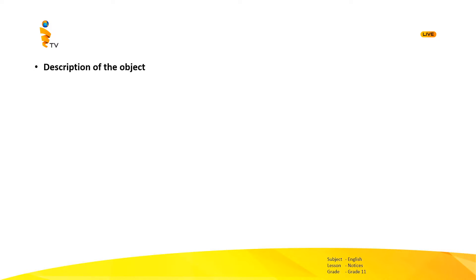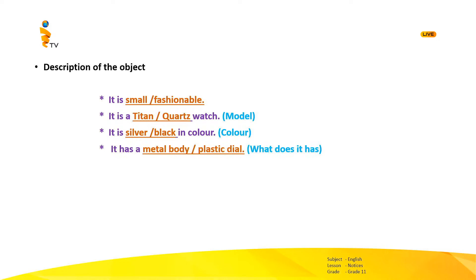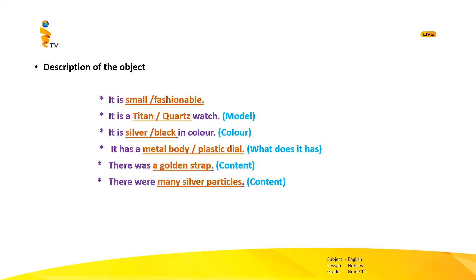How can we describe the object? These are some example sentences: 'It is small' or 'It is fashionable'. For the model: 'It is a Titan watch'. To tell about the colour: 'It is silver in colour'. To describe what it has: 'It has a metal body'. To talk about the content in singular form: 'There was a golden strap'. To talk about the content in plural form: 'There were many silver particles'.